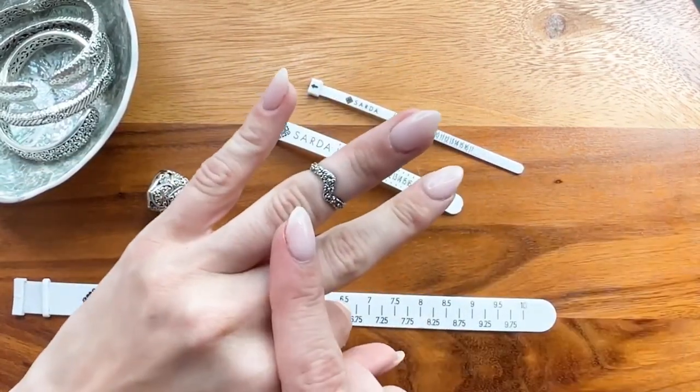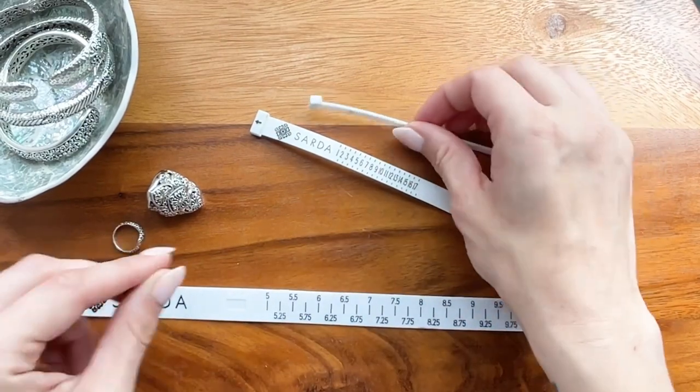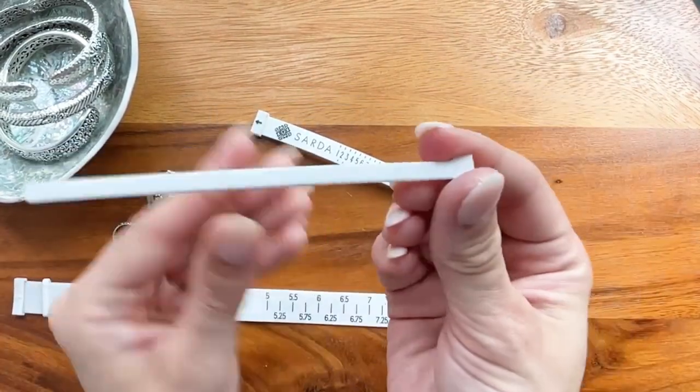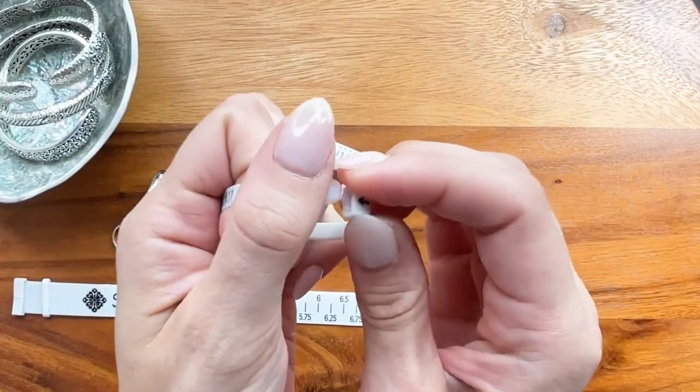For smaller and midi band rings you will want to use the thin sizer. Again, insert tab through the loop and pull.